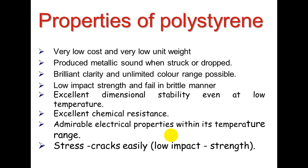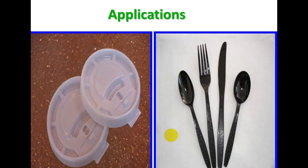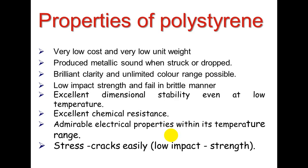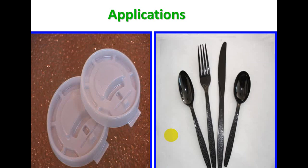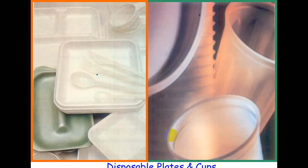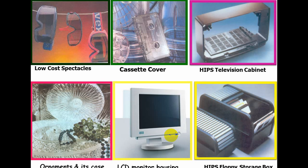Further properties of polystyrene include excellent dimensional stability even at low temperatures, excellent chemical resistance, and good electrical properties within its temperature range. However, it stress-cracks easily and has low impact strength. Applications include lids, tablespoons, forks, disposable plates and cups, low-cost spectacles, and cassette covers.